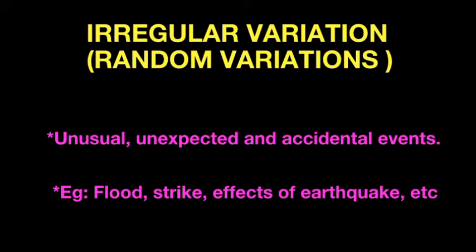Now we move to the next important component of time series: irregular fluctuations, or random variations. Irregular fluctuations are those caused by unusual, unexpected, and accidental events in business. These are various types of irregular variations.